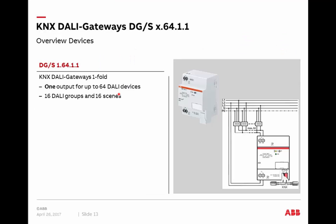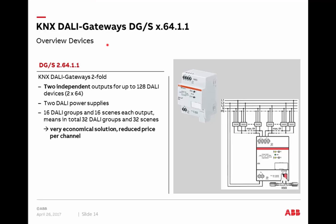Let's come to the components. Starting with the one-fold device, DGS 1-64-1-1 — one channel, one DALI output, up to 64 ballasts can be connected. You can create 16 DALI groups on the DALI side, 16 light scenes, and much more. The two-fold device, DGS 2-64-1-1, is a duplication of channel A to channel B — two independent DALI outputs for a total of up to 128 DALI devices, two times 64 ballasts per channel. Both have a 230-volt connection, and such a DALI gateway always serves as a DALI power supply for the DALI system.